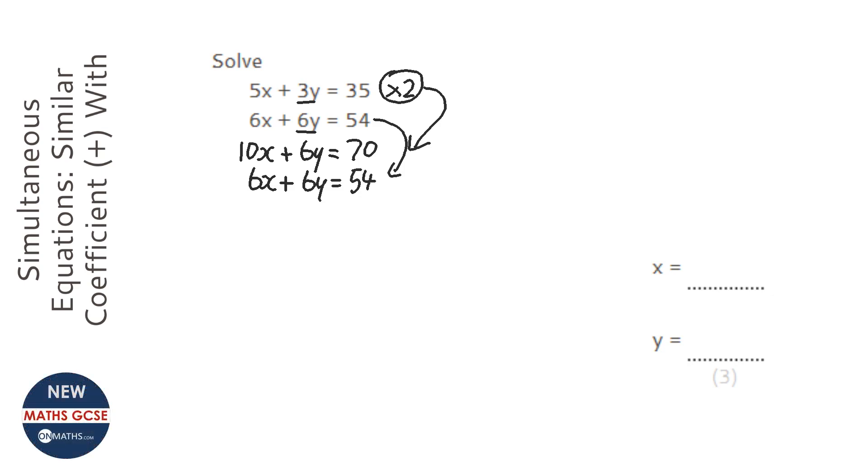Especially if you know you're going to subtract. With simultaneous equations, we always work downwards. I'm just going to circle these to remind me we're going downwards. And the rule is if the matching coefficients, which is the y here, have the same sign, we subtract.